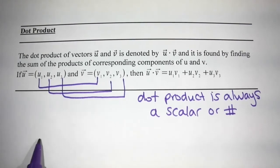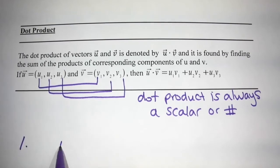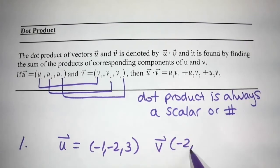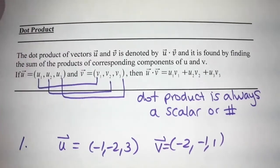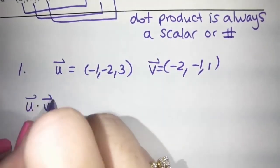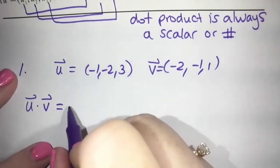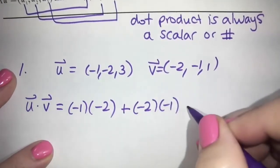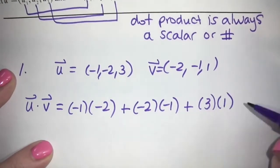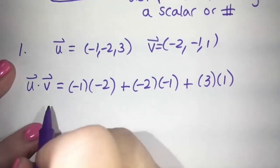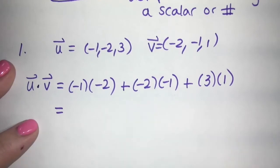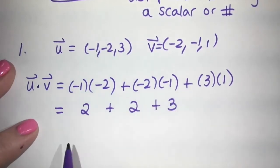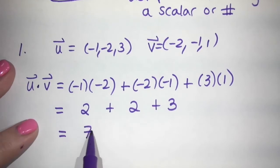So for number one, we've got vector u = (-1, -2, 3) and vector v = (-2, -1, 1). Let's find u dot v. We do first component times first: negative 1 times negative 2, plus second times second: negative 2 times negative 1, plus third times third: 3 times 1. Negative times negative is positive 2, negative 2 times negative 1 is positive 2, and 3. So we get 2 plus 2 plus 3, which is 7 as our dot product.